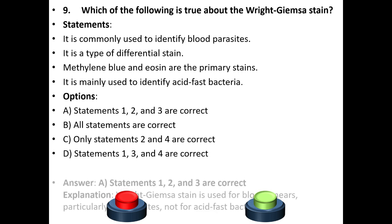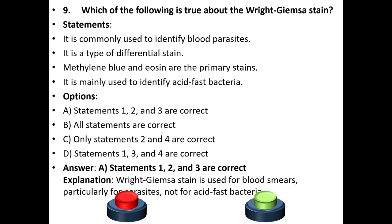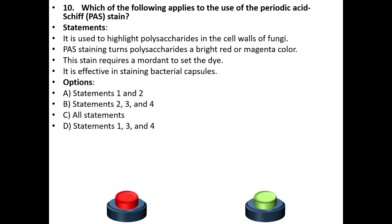The correct answer is A: statements 1, 2, and 3 are correct. Explanation: Giemsa stain is used for blood smears, particularly for parasites. It is not used for acid-fast bacteria.